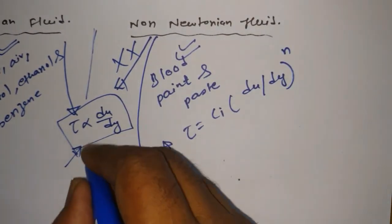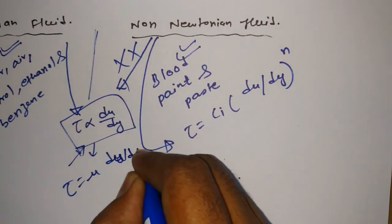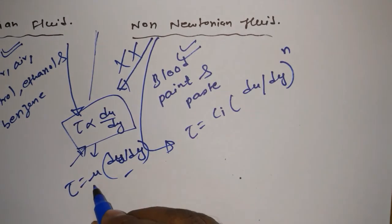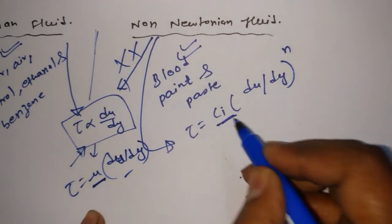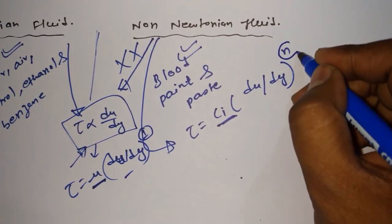Now, you can see, if we write this equation, tau is equal to mu du upon dy, here is the relation. We are having mu, here we are having Ci. Here we are having 1 and we are having n.